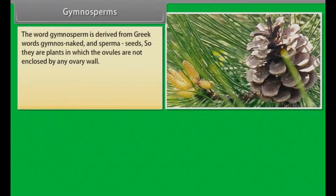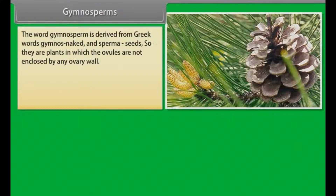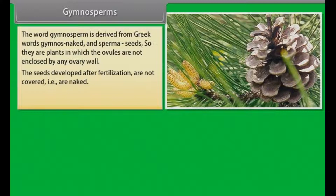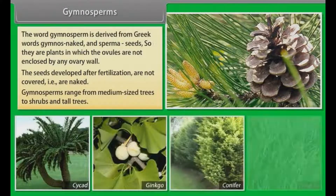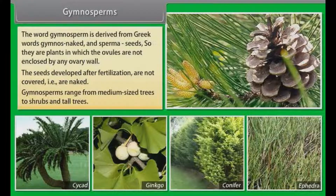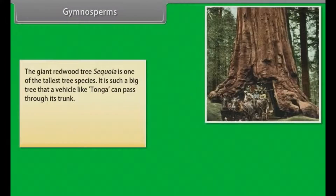Gymnosperms. The word Gymnosperm is derived from Greek words 'gymnos,' meaning naked, and 'sperma,' meaning seeds. So they are plants in which the ovules are not enclosed by any ovary wall. The seeds develop after fertilization and are not covered — that is, they are naked. Gymnosperms range from medium-sized trees to shrubs and tall trees. The giant redwood tree, Sequoia, is one of the tallest tree species — so large that a vehicle can pass through its trunk.